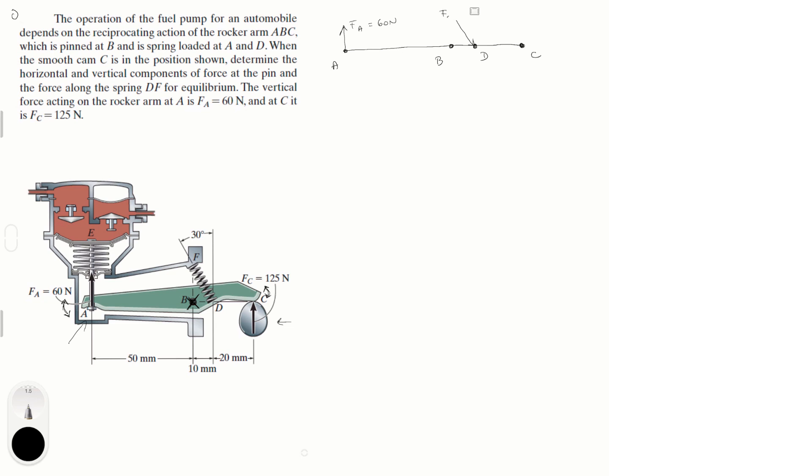Let's call it F of the spring, F_S. And we know that this is an angle of, this angle right here is 30 degrees. And then we know that we have a force here F_C which is equal to 125 newtons.